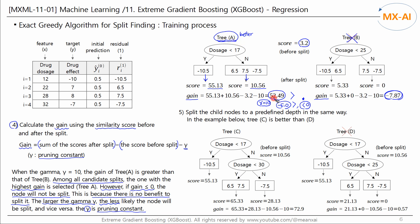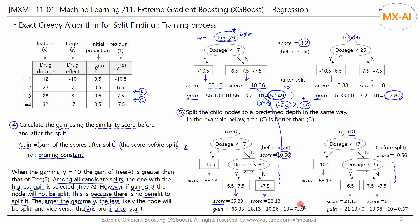Let us assume that tree A is the final choice in the first iteration round because it has the highest gain and the gain is greater than zero. In Step 5, we continue to split tree A, this time using split points C and D. We calculate the similarity scores for each leaf node and use them to calculate the gain. The score before node splitting is 10.56. The gain of the split in tree C is 72.9, and for tree D it is 0.57. Since tree C's gain is greater and greater than zero, tree C is selected as the final tree in the second round.